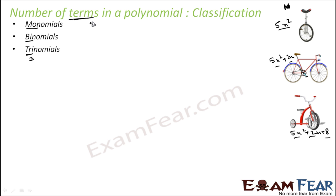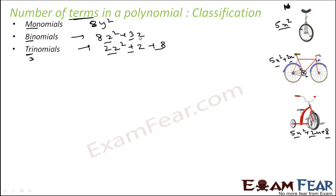For example, monomial: 8y squared. Binomial, two terms: 8z squared plus 3z. This is not a very critical classification because it does not make much difference whether it has one, two, or three terms. But it's good to know: one term is monomial, two terms is binomial, three terms is trinomial. Monomials, binomials, and trinomials are all called polynomials.